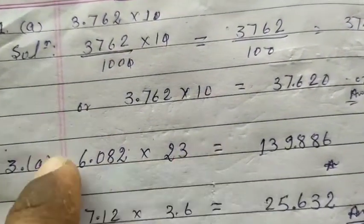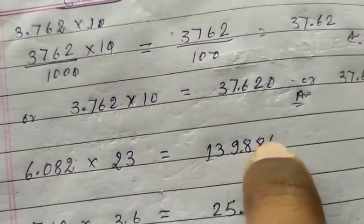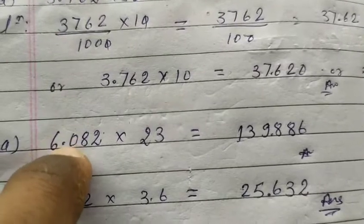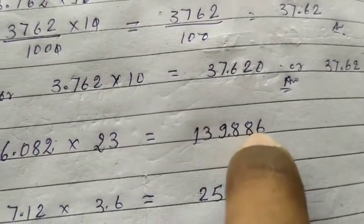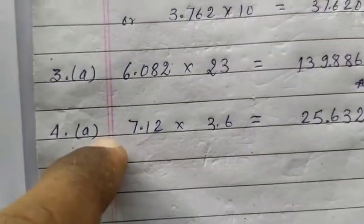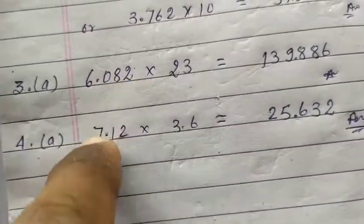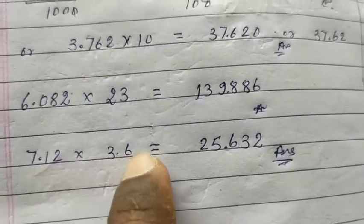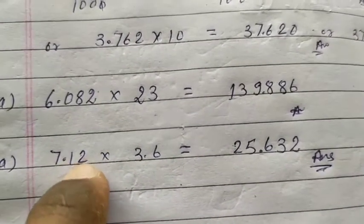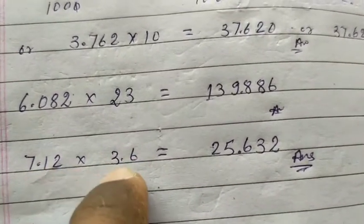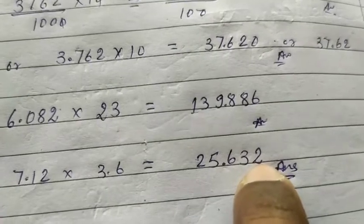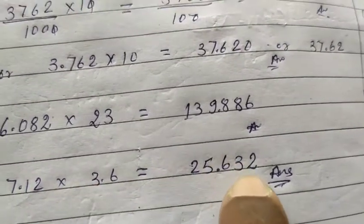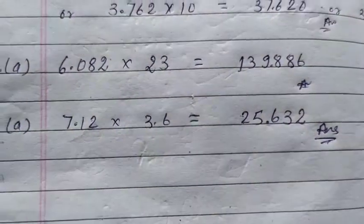To summarize: simply multiply the two numbers forgetting the decimal for a moment. When you find the product, count the total decimal digits in both numbers — for example, if one number has digits before two decimal places and the other has one, that's two plus one equals three digits. Then count three digits from the right side of the product to place the decimal. For instance, 0.7 times 0.12: decimal places are one and two, total three, so count three from the right in the product.